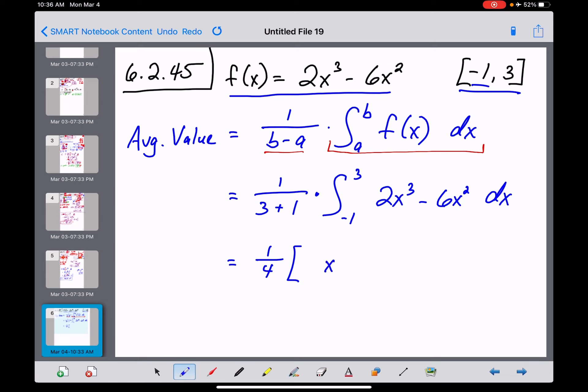That is gonna become an x to the fourth. The 2 divided by 4 is gonna make a 1 half out in front of that. And then minus, this will be an x cubed now. 6 divided by 3 is 2, and all of that is gonna go from negative 1 to 3.